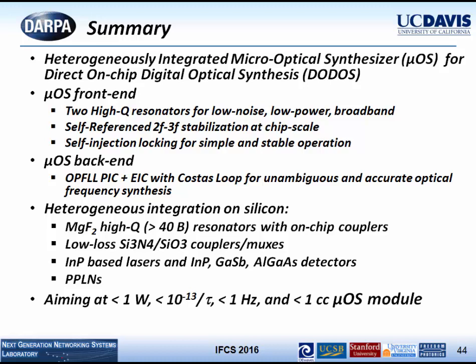The back-end uses an optical phase frequency lock loop together with electronic ICs for unambiguous and accurate optical synthesis. Heterogeneous integration on silicon includes fluoride resonators with low-loss on-chip coupling at Q of ~40 billion, low-loss silicon nitride/silicon dioxide waveguides with indium phosphide devices, plus gallium antimonide detectors, erbium-doped amplifiers, and thulium-doped fiber lasers. The DODOS goals we're targeting are: below 1 W power consumption, below 10⁻¹³/τ stability, below 1 Hz accuracy or resolution, and below 1 cubic centimeter volume. That concludes my talk.